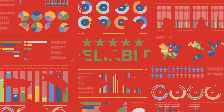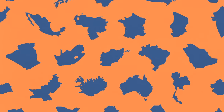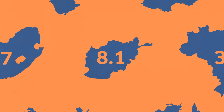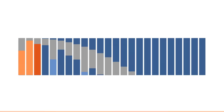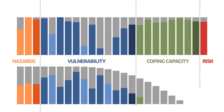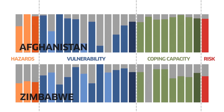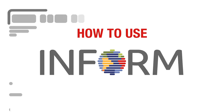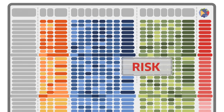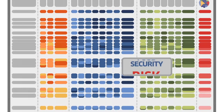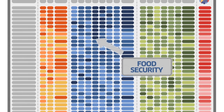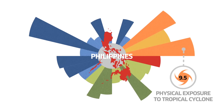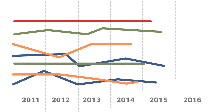INFORM creates a risk profile for every country. Each has a rating between 0 and 10 for risk and all of its components, so it's easy to compare. You can prioritize countries by risk or any of its component parts, and decide how best to reduce risk and monitor risk trends.